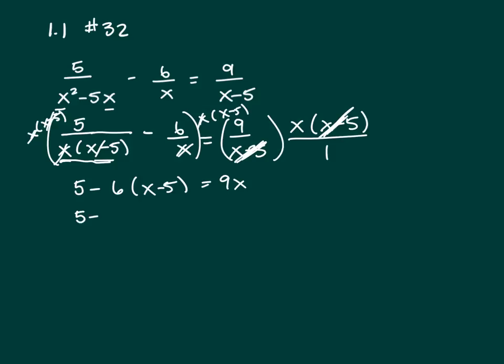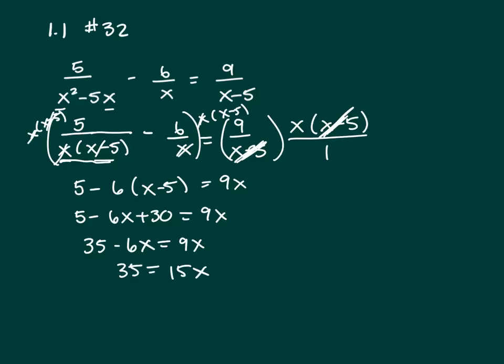So now let's get rid of our parentheses — that's going to be 5 minus 6x plus 30 equals 9x. And that's 35 minus 6x equals 9x. That's 35 equals 15x — add 6x to both sides. Now divide both sides by 15, so you get 35 over 15 equals x, and this will reduce.